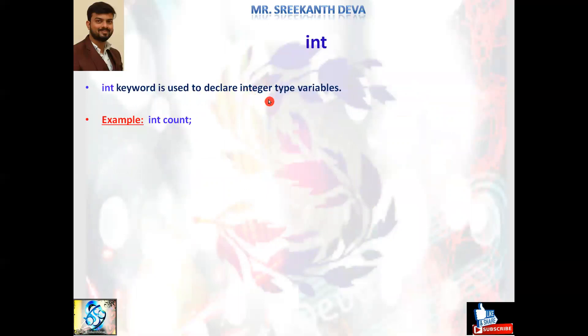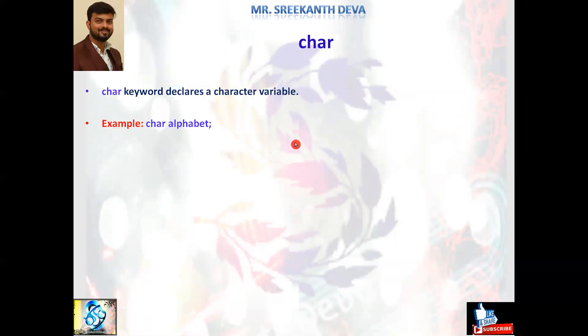int is a keyword used to declare integer type variables. For example, int count — we can assign any numerical values like int count = 10, 20, 30, and so on.